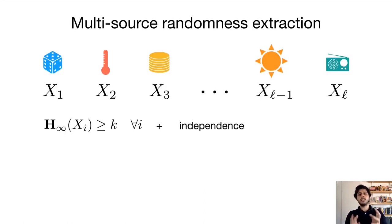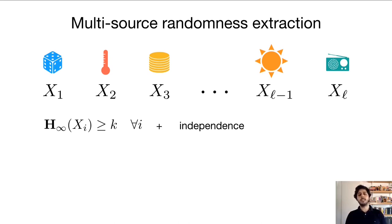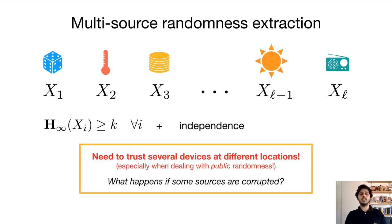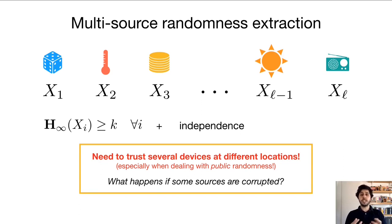In the multisource setting, we have L independent weak sources, each with k bits of min entropy. If we accept this model, then we're implicitly trusting the sampling processes that were used to generate each of these weak sources, and this is especially critical when we're dealing with public or shared randomness, as is often the case in cryptography.